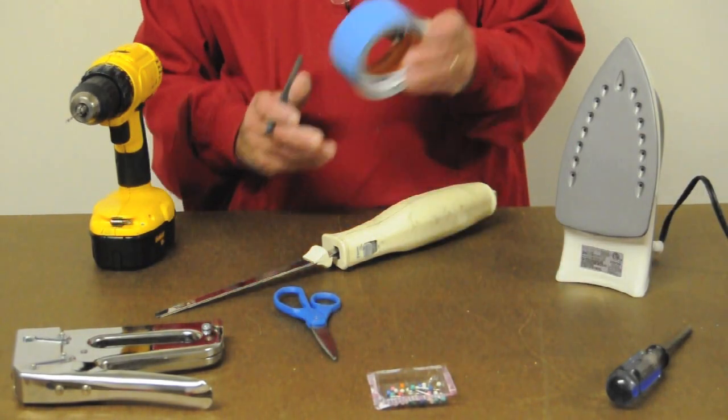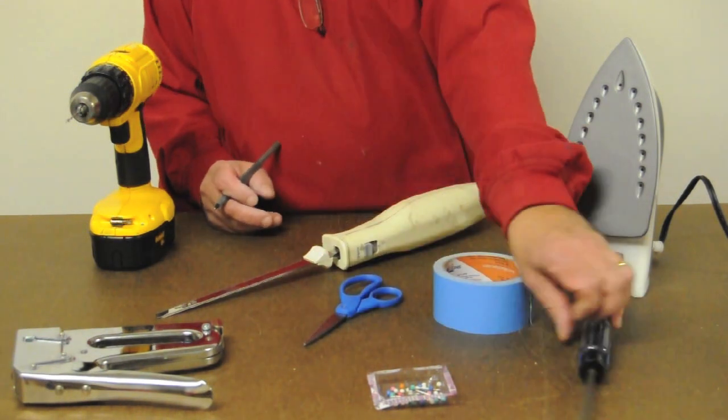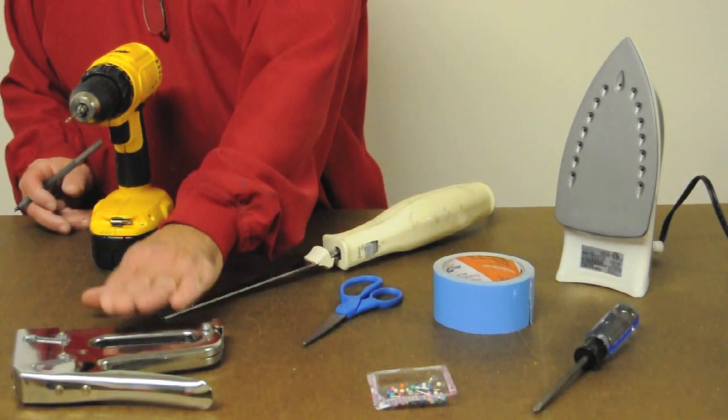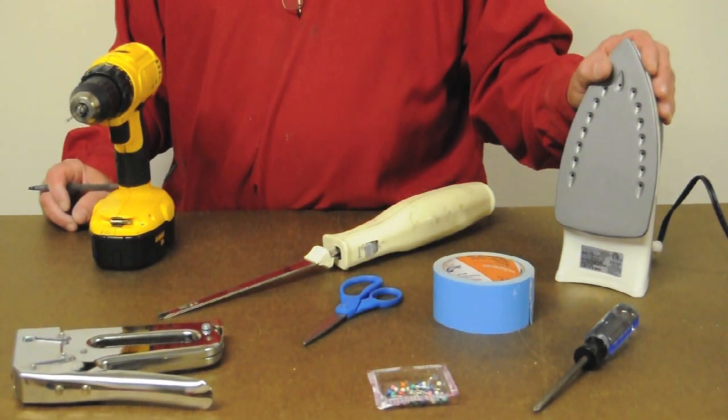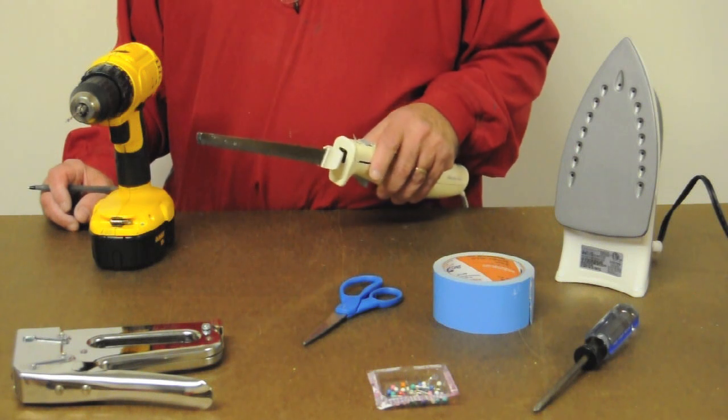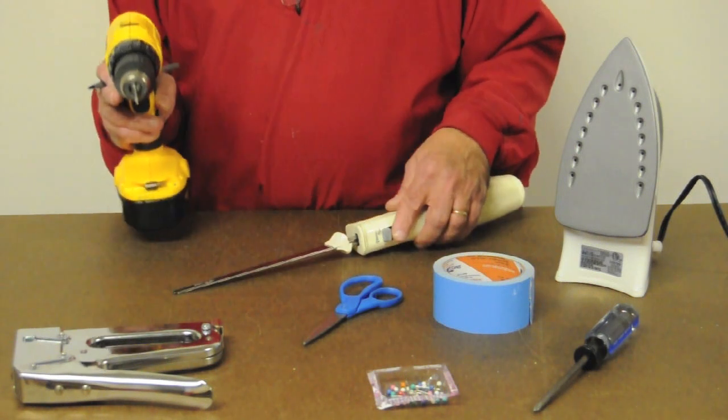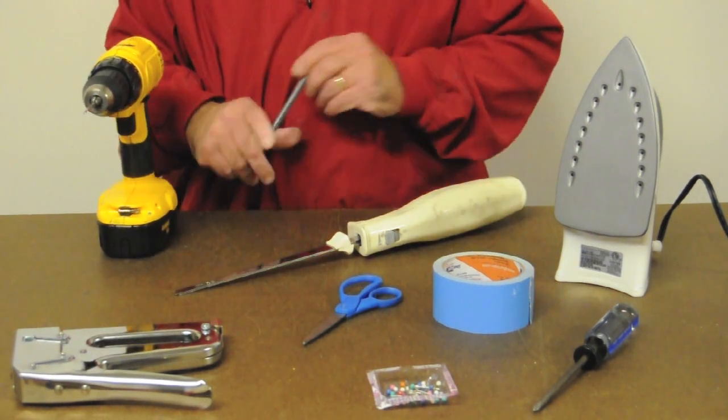You'll need double-sided tape, scissors, a Phillips head screwdriver, a staple gun, some straight pins, an iron, a sharp knife—an electric knife is useful but any sharp knife will do—a drill, and a pen or pencil.